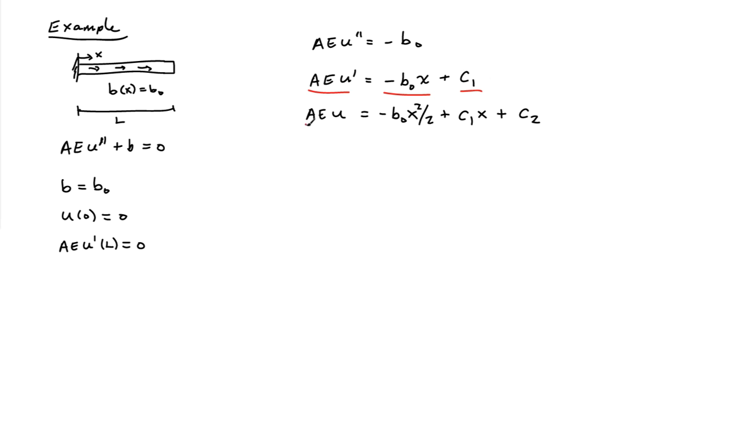And now if I integrate a second time, I'll have AE u on one side. And then on the other side, I'll pick up an additional constant of integration c₂. c₁ and c₂ are the two constants of integration that we eliminate using our two boundary conditions.